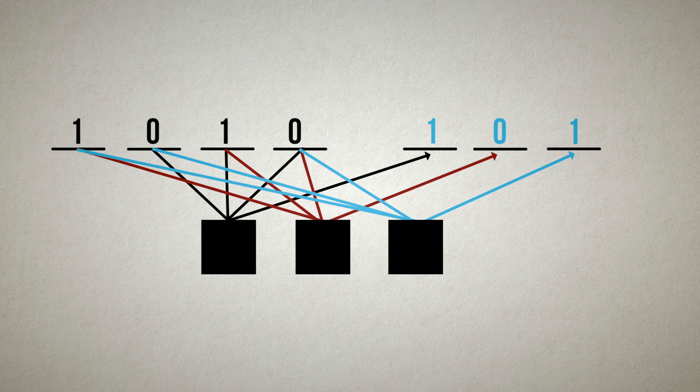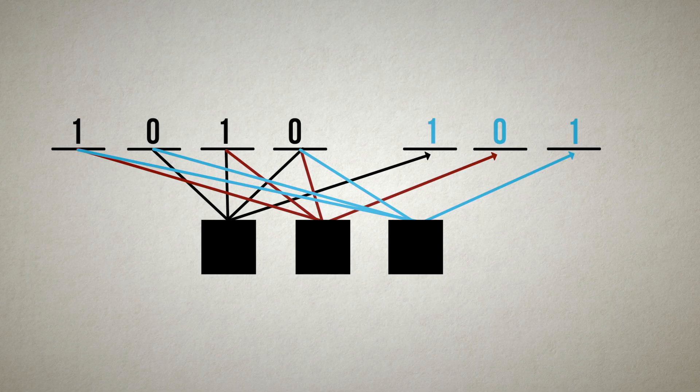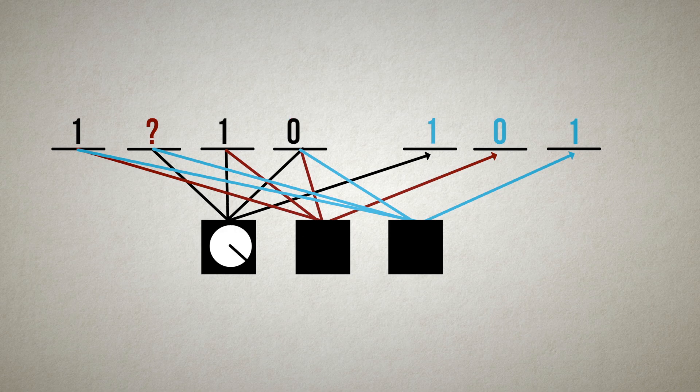This cascade effect where one correction allows us to solve another is a very important insight because instead of correcting all erasures in one step, we can remove erasures in multiple passes or iterations.